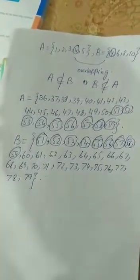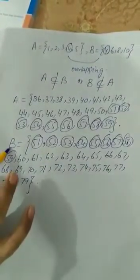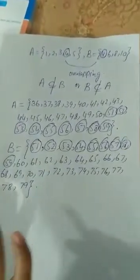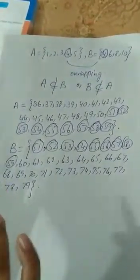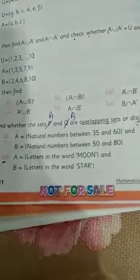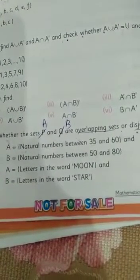This is now overlapping set and also A is not a subset of set B and B is not a subset of set A. Therefore this is an overlapping set. Now question number 2, we have A is equal to letters in word moon and B is equal to letters in the word star.